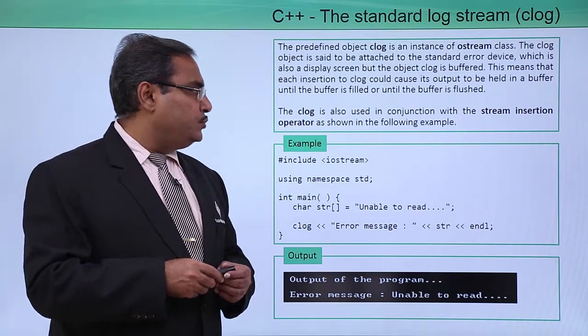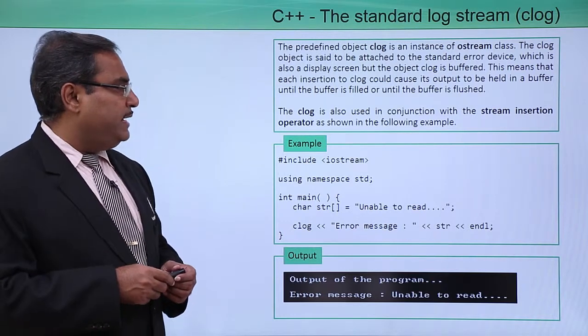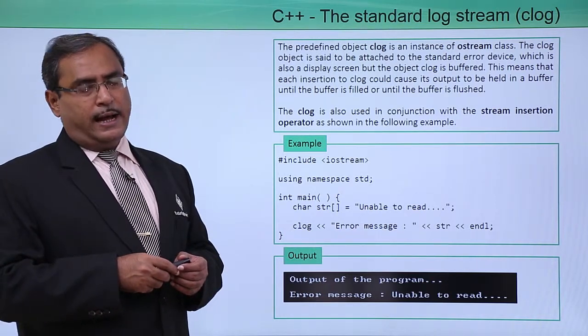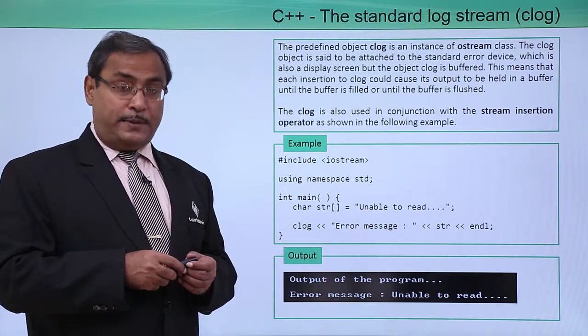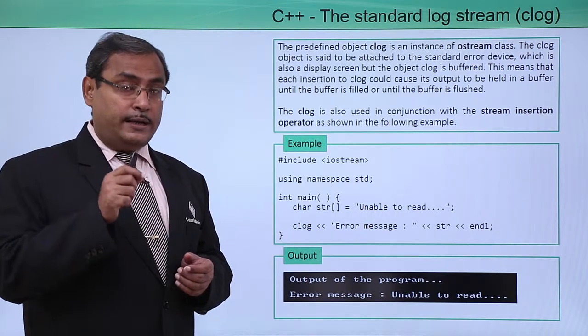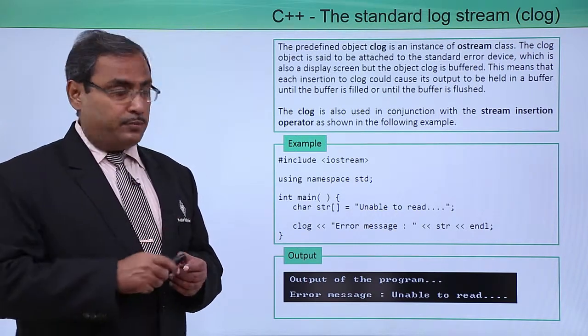The clog is also used in conjunction with the stream insertion operator, which is represented using the double less than symbol.